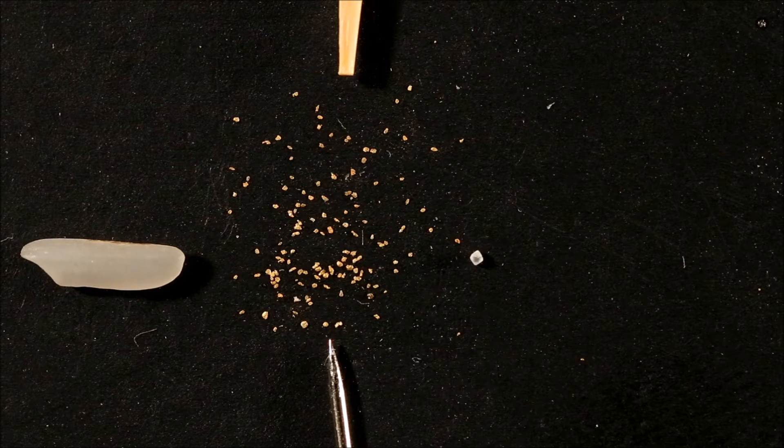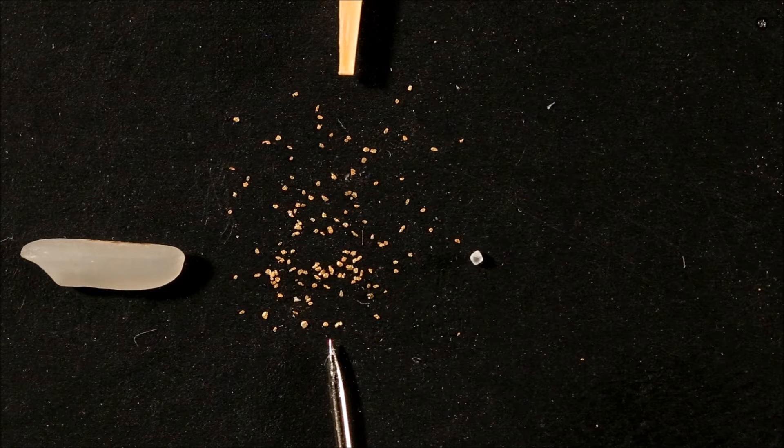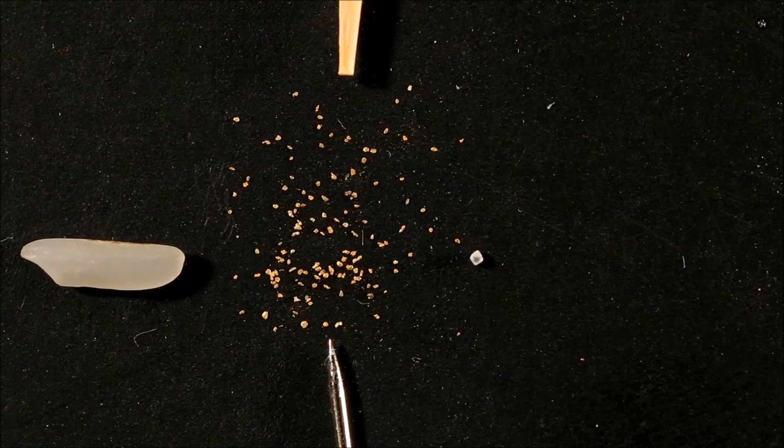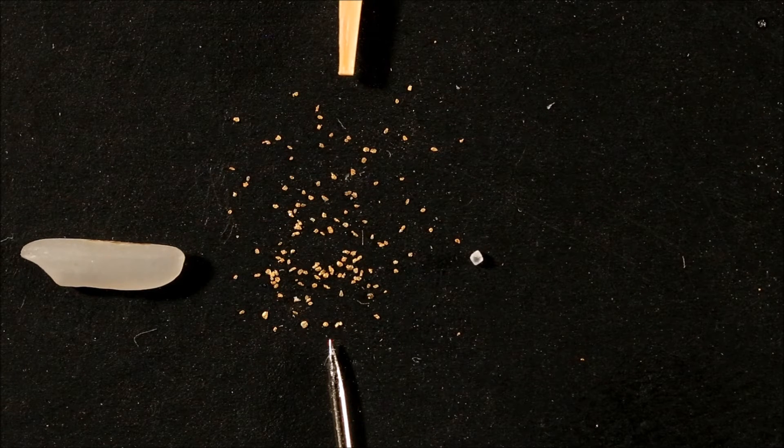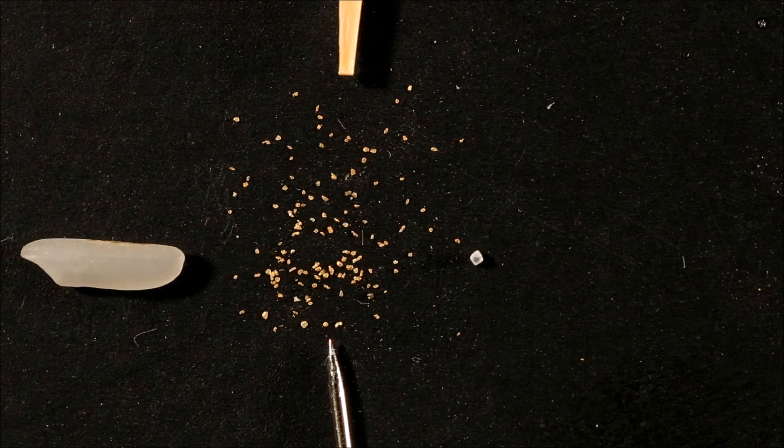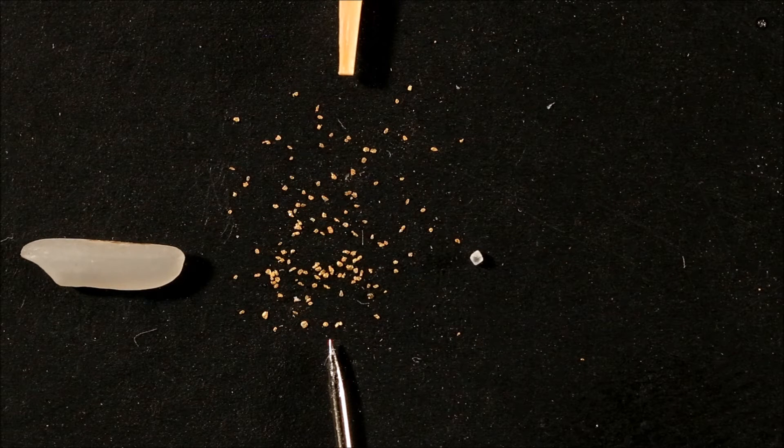Goldgold.com defines flower gold, or dust, as anything finer than 40 mesh. So a minus 40 mesh or below, they consider flower gold.